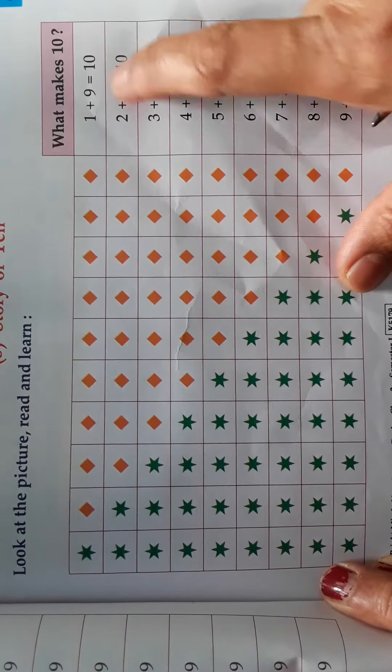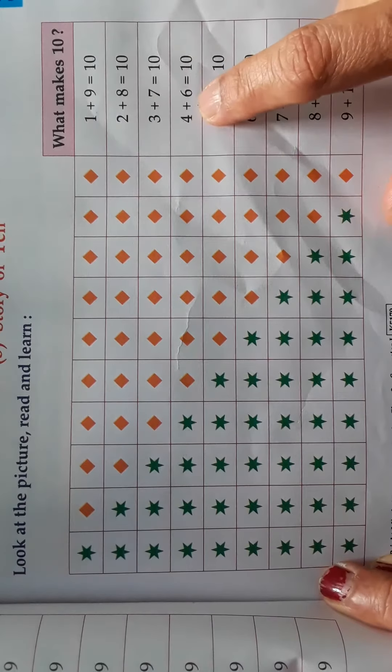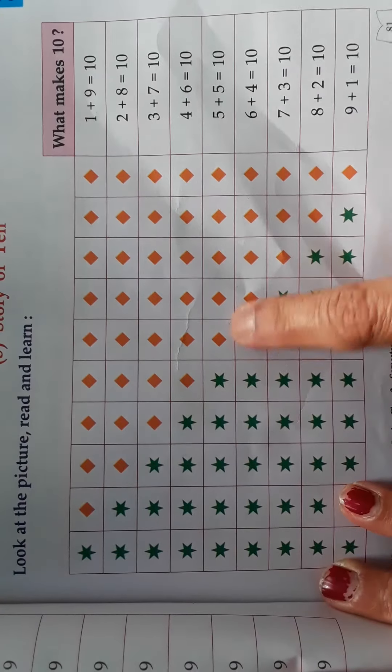makes 10. 2 plus 8 makes 10. 3 plus 7 makes 10. 4 plus 6 makes 10. 5 plus 5